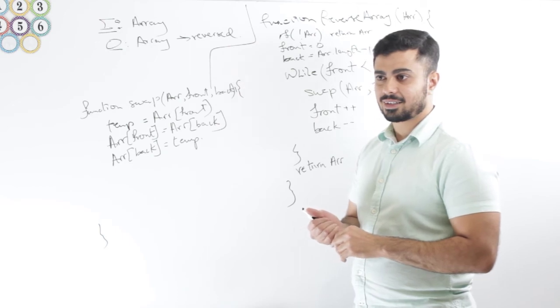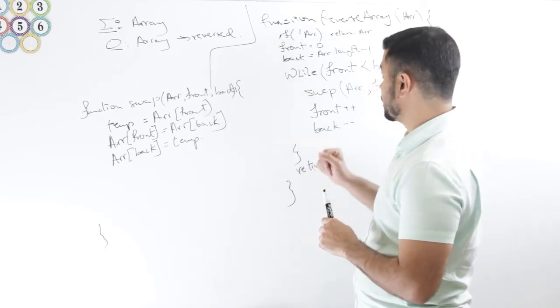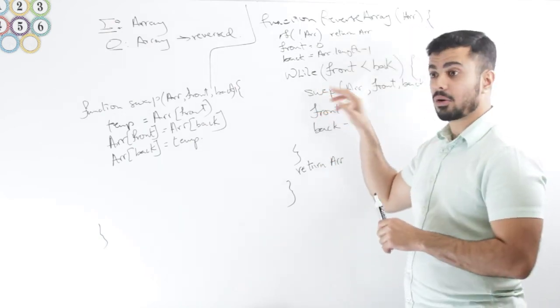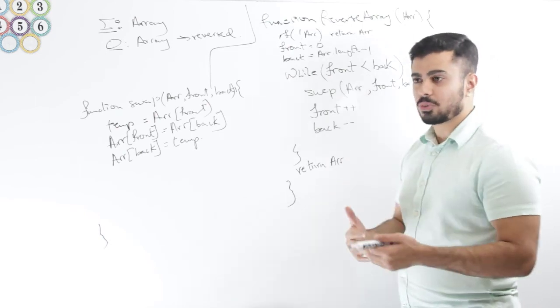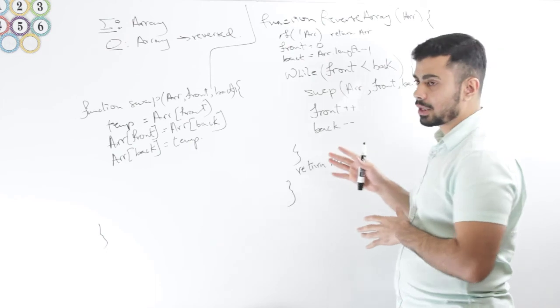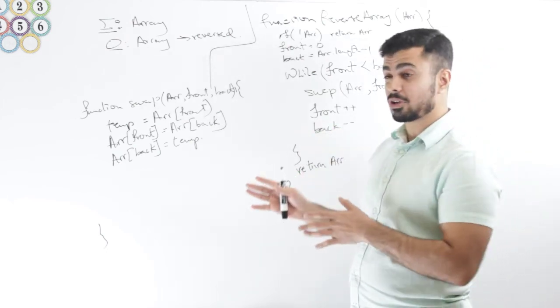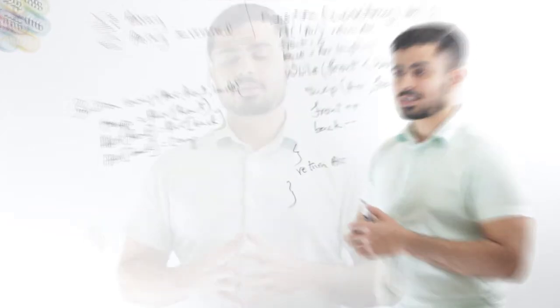And what about the time and space complexity? So the time complexity for this, as we are iterating through the entire array, basically it is n over 2, but it's still linear. So the time complexity is going to be linear. I'm not really storing anything besides maybe a couple of variables, so the space complexity is going to be constant here.